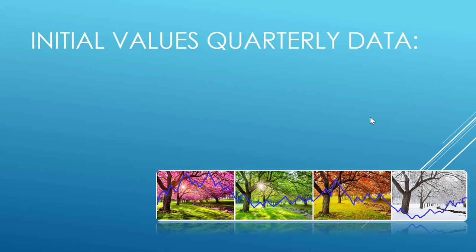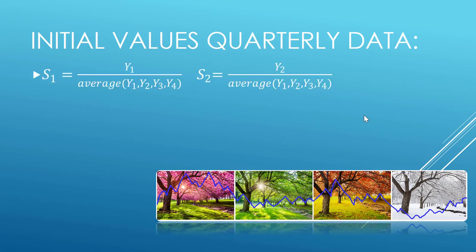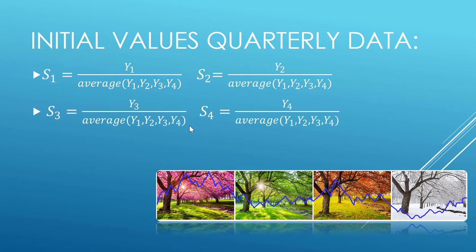If we had quarterly data, our initial seasonal values S1 through S4 give us the first four quarters of seasonal factors, where you take your actual y value for each of those time periods or quarters, divide by the average of all the y values for that year. That will get you the size of your actual data compared to the average.